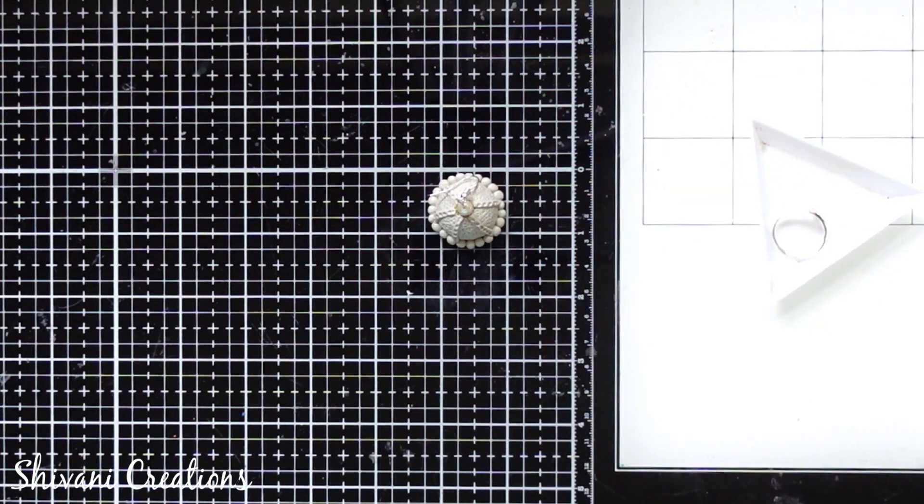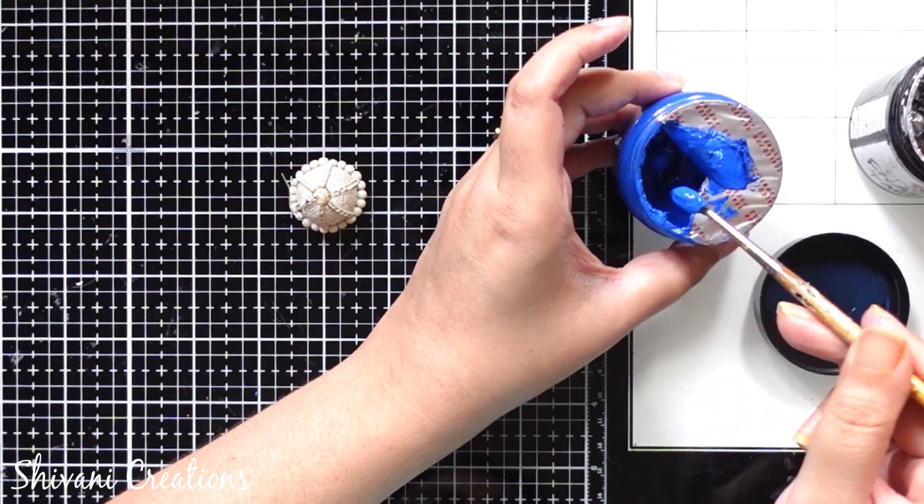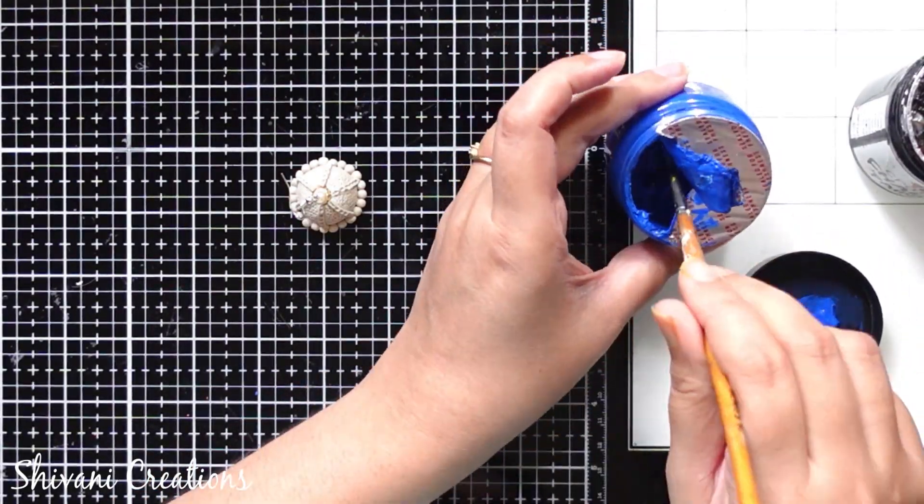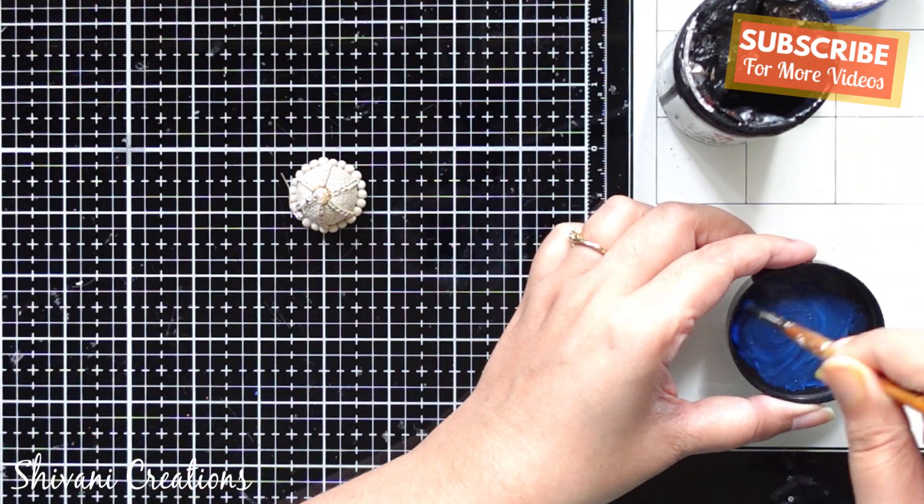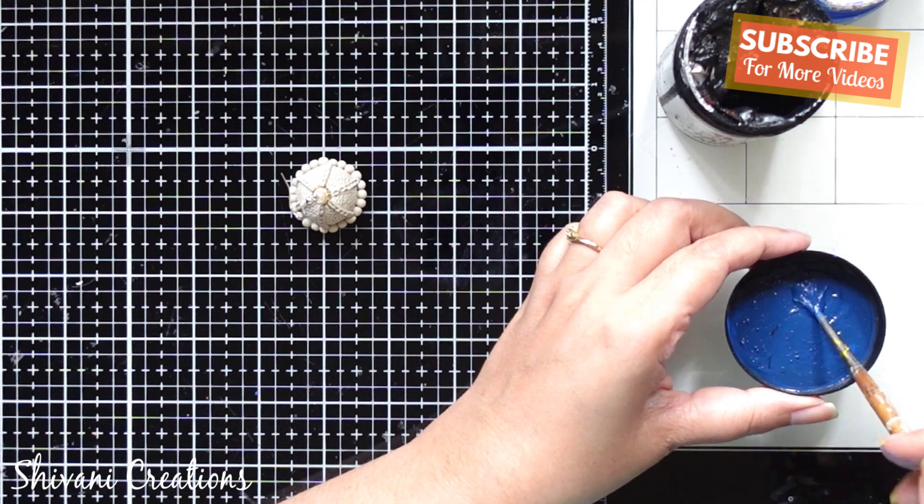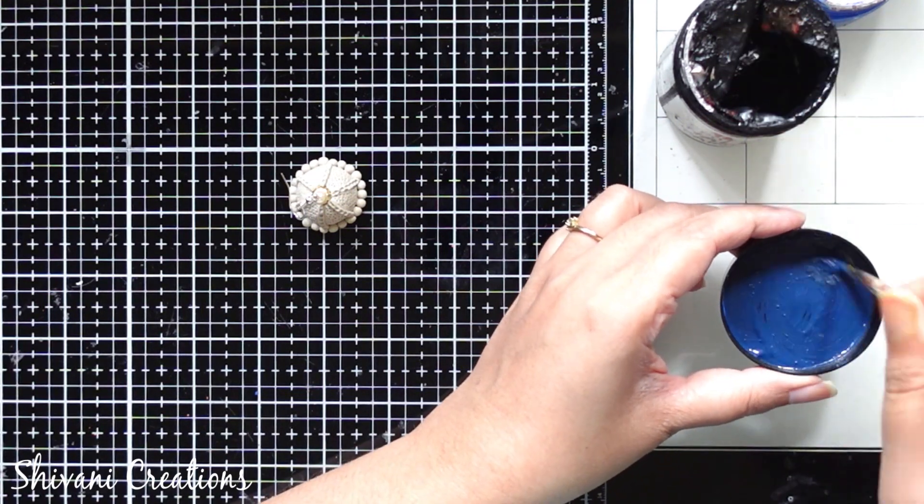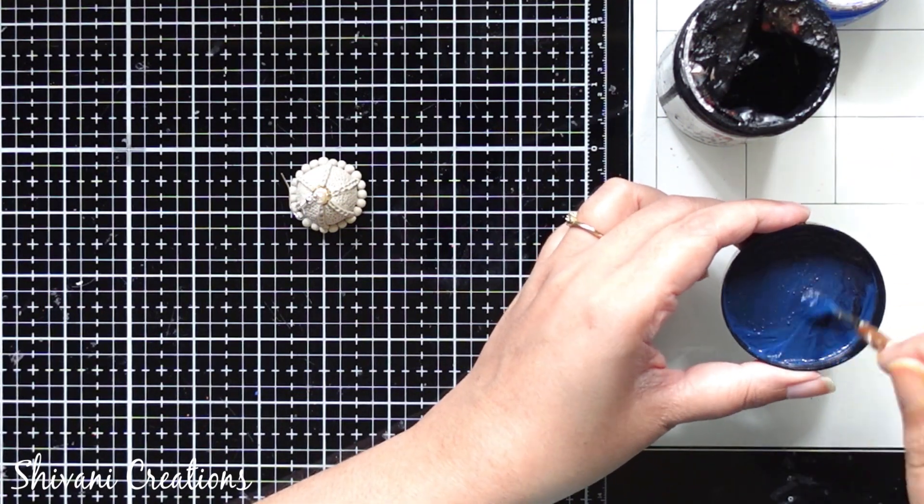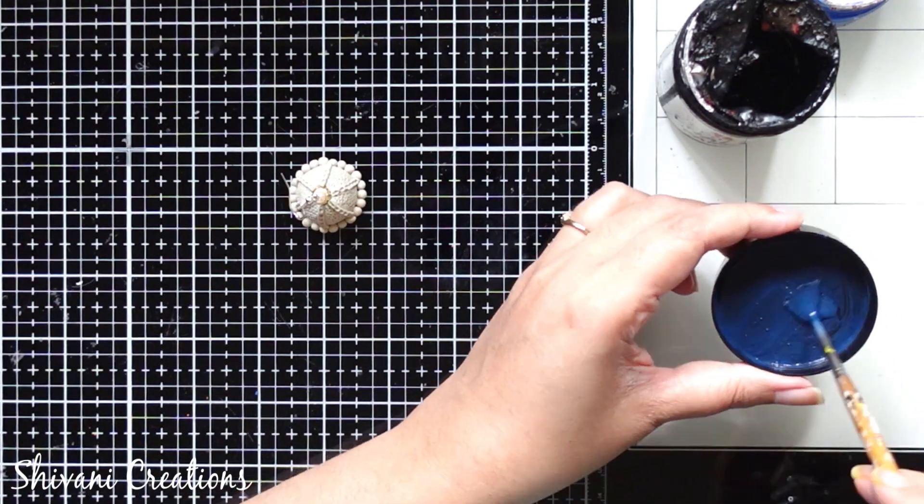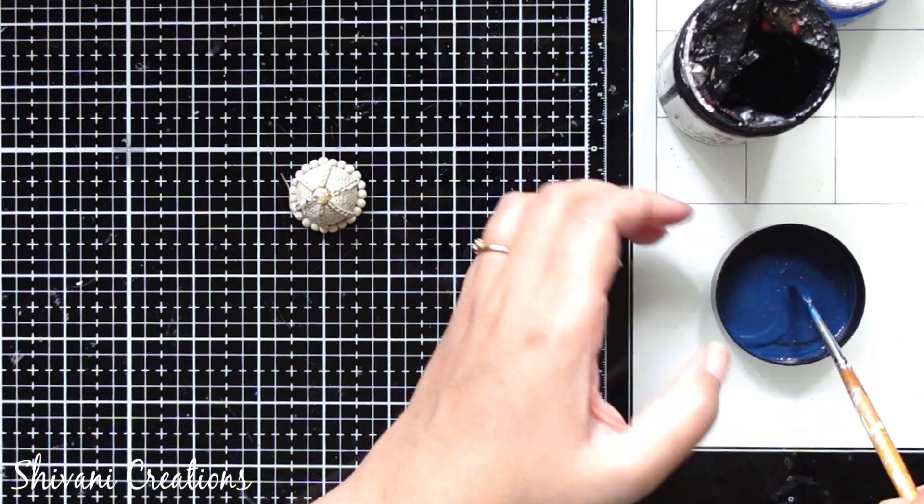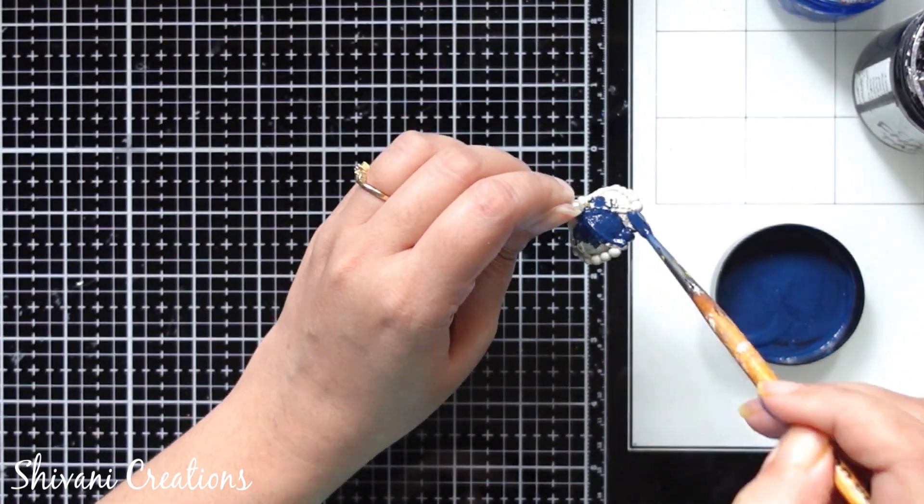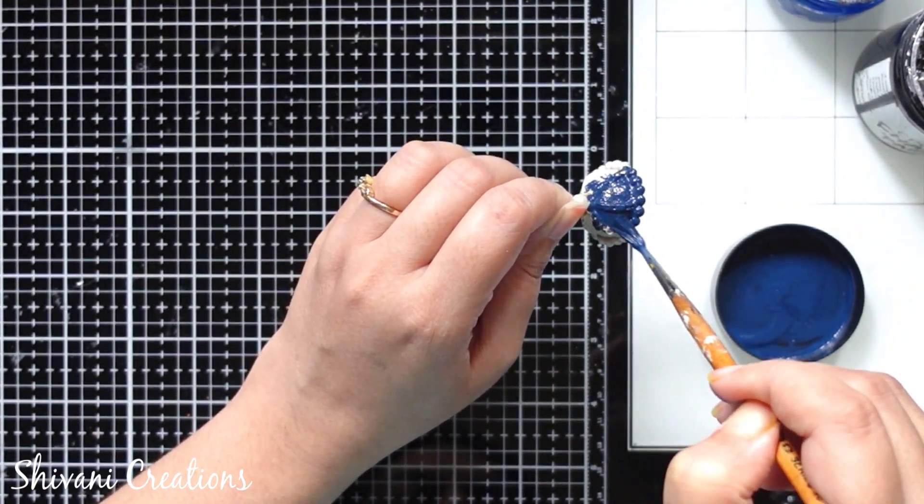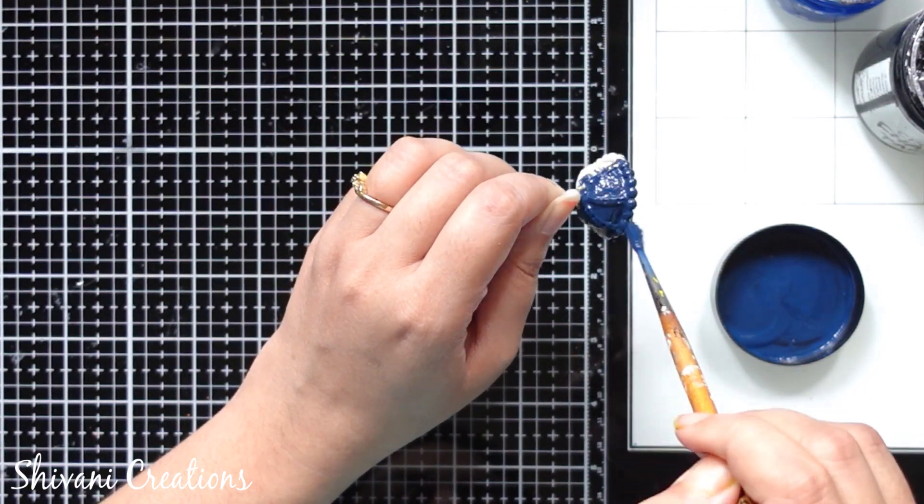Now it's time to color it. So for this I am taking my dark blue color chalk paint and I am mixing a little bit of black with this to make the navy blue shade. You can use any color of your choice. You can change the color as well. I just wanted to make a darker shade, that's why I am using the navy blue color. So just color it completely from outside and inside.